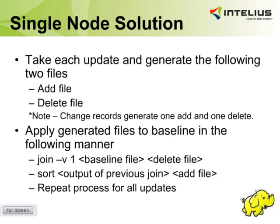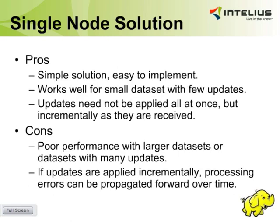There will also be a Q&A session at the end. Originally, with our single-node solution on one system in a Linux world, we would take those updates we received and generate two files from them — one would be an add file and one would be a delete file. Note that changes — records indicating an update is a change — you would make both an add and a delete file from those. Then to apply that to the baseline, we'd do an inverse join on the baseline with the delete file, keeping all records that don't appear in the delete file, then sort and add in the add files. Very simple — works pretty well if you don't have a lot of data and not too many updates.